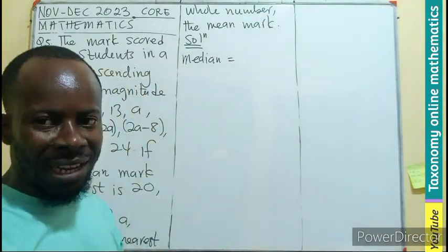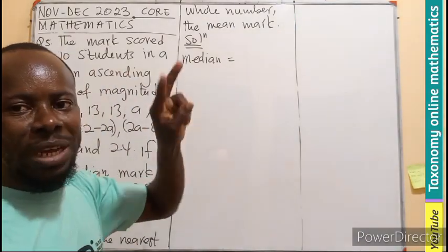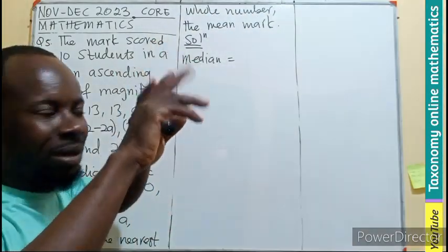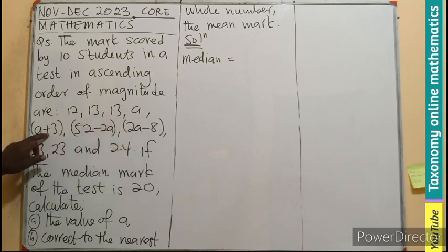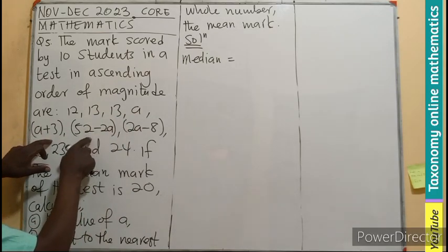In this case, don't forget that we are having 10 values. So it is going to be the 2 middle terms. Counting from left 5 terms, from right 5 terms, the middle terms. So in this case, 1, 2, 3, 4, 5. 1, 2, 3, 4, 5. These are the 2 middle terms.